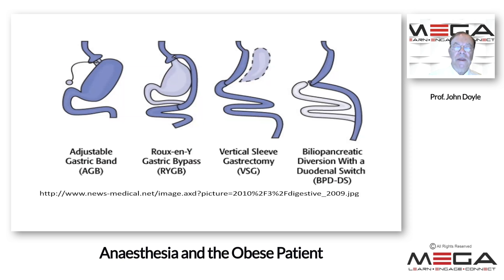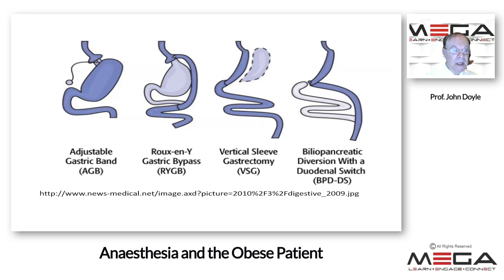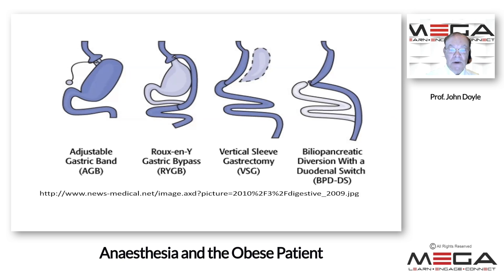Many of you will have experience with bariatric procedures carried out for obese patients. When they do lose weight, their problem with hyperglycemia tends to get better and their problems with liver disease tend to improve. There are a variety of procedures: the adjustable gastric band remains popular, the Roux-en-Y is very effective, the vertical sleeve gastrectomy is also carried out — particularly common at my institution — as well as the biliopancreatic diversion with duodenal switch. But the Roux-en-Y and the vertical sleeve gastrectomy are most common at Cleveland Clinic.